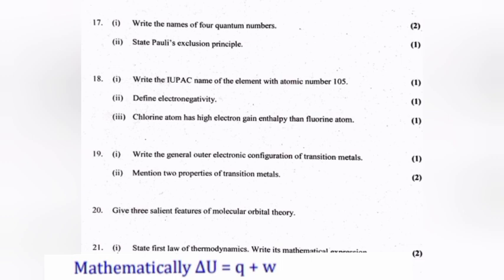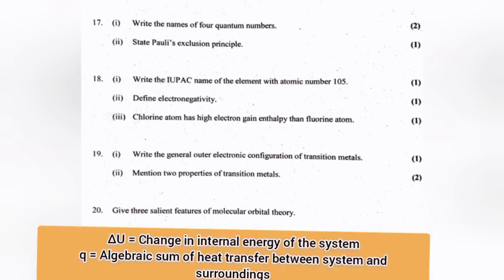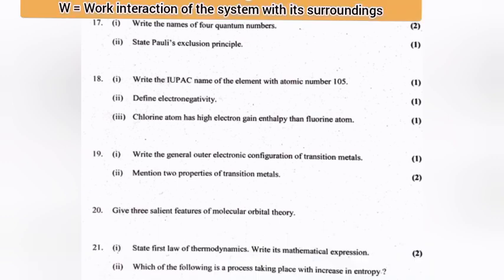Mathematical expression: ΔU = q + w, where ΔU is the change in internal energy of the system, q is the algebraic sum of heat transfer between system and surroundings, and w is the work interaction of the system with its surroundings.